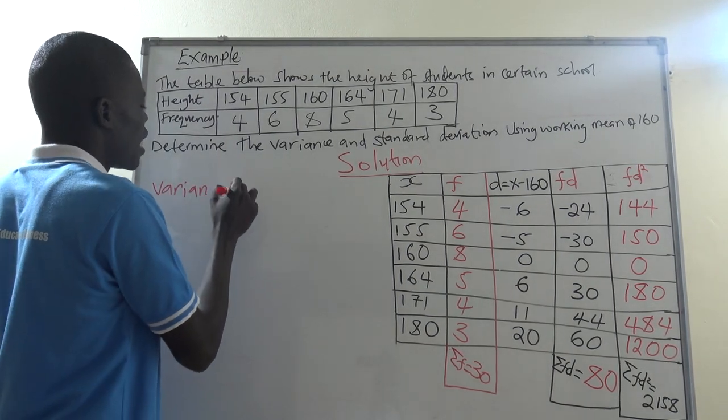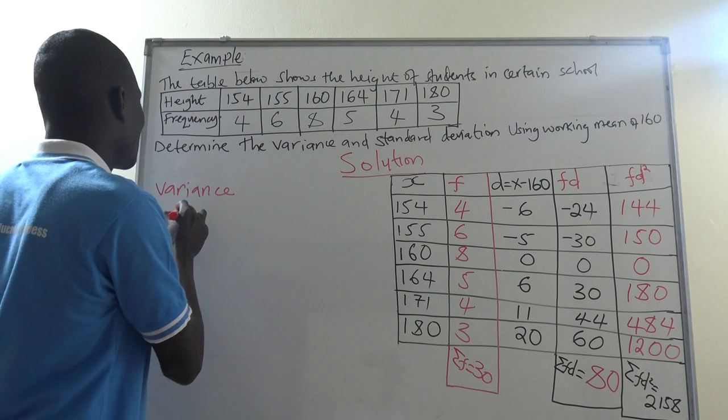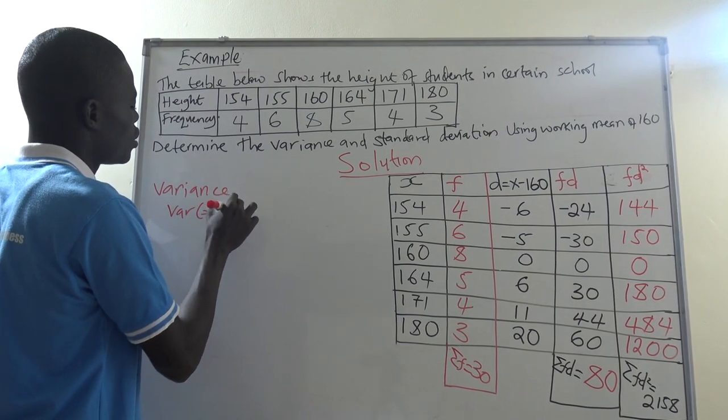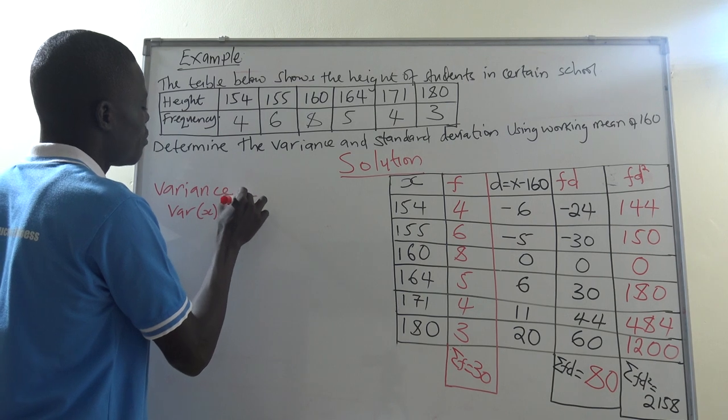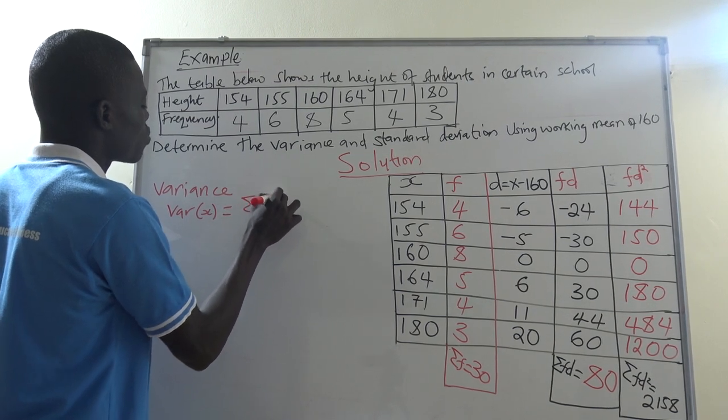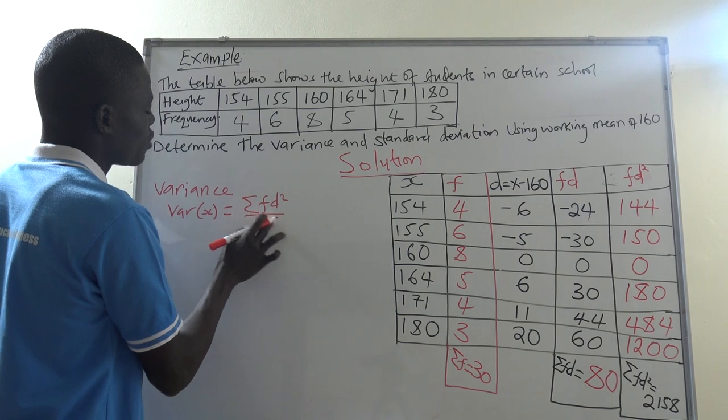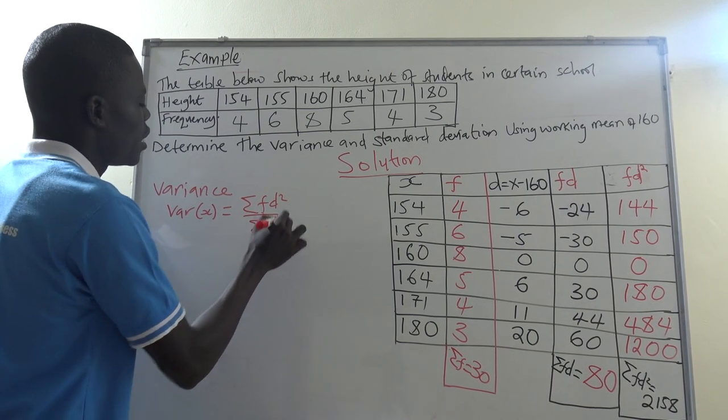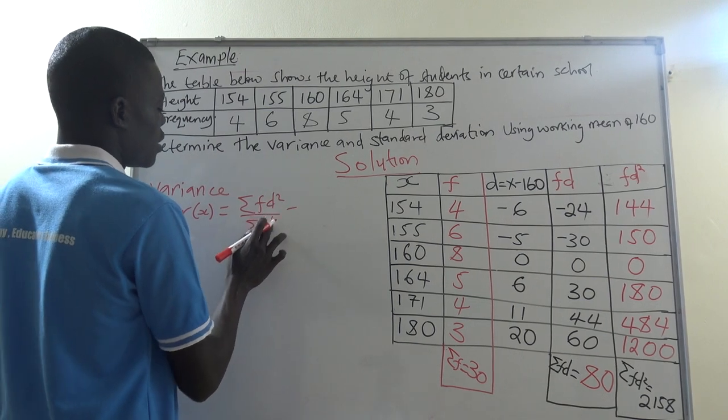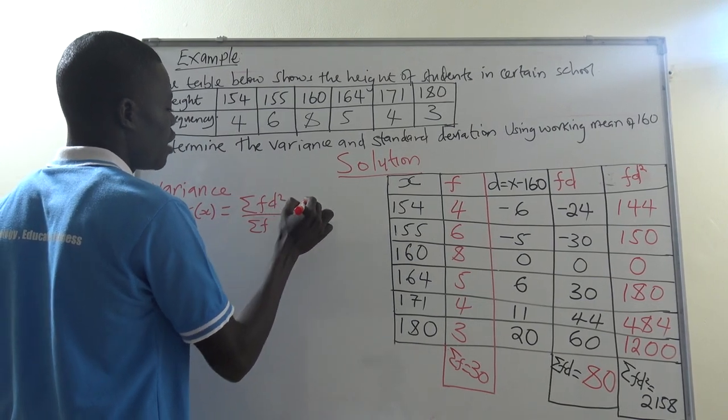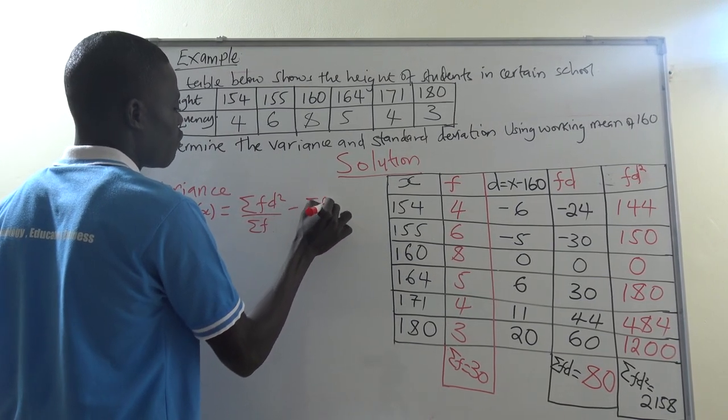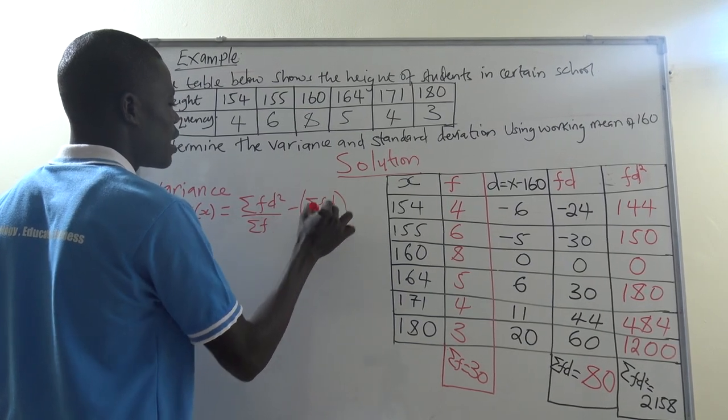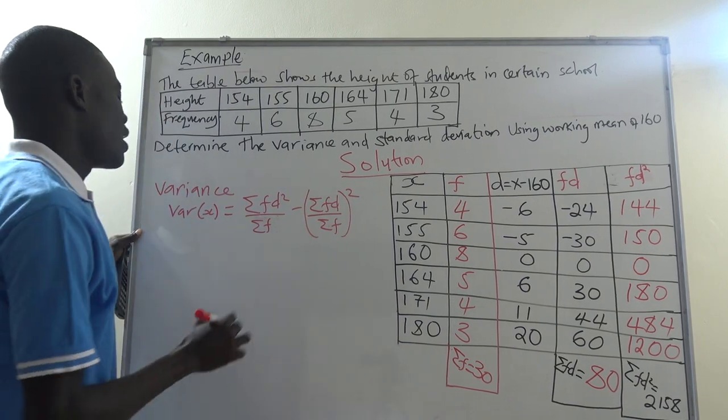Variance, and we said we denote it as Var(X), which is equals to summation of FD squared divided by summation of F, minus summation of FD divided by summation of F, but this one is squared.